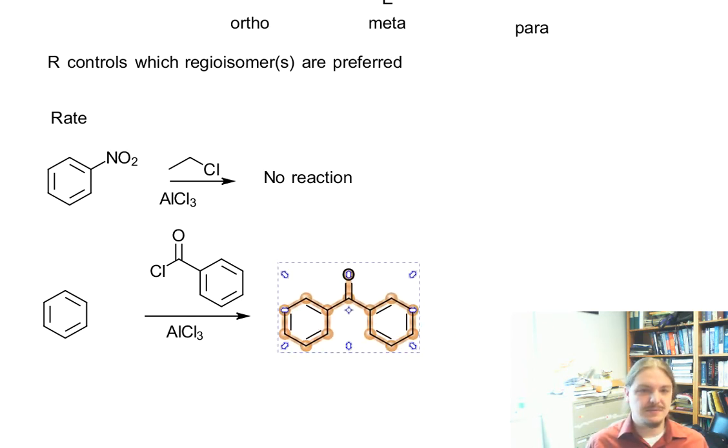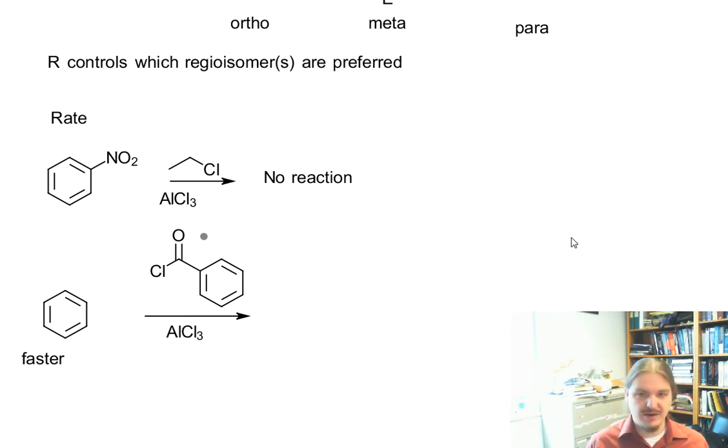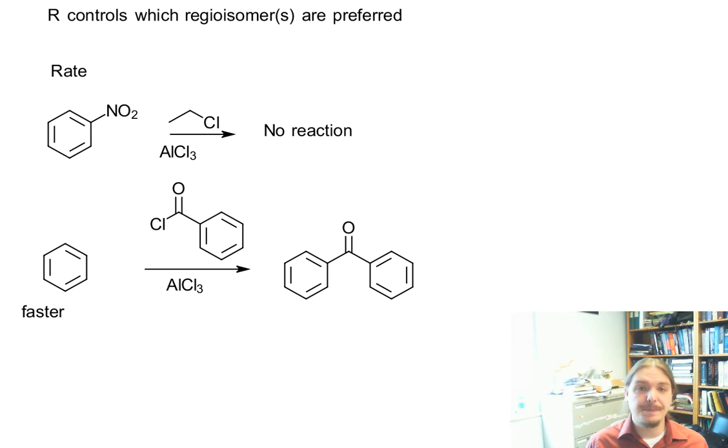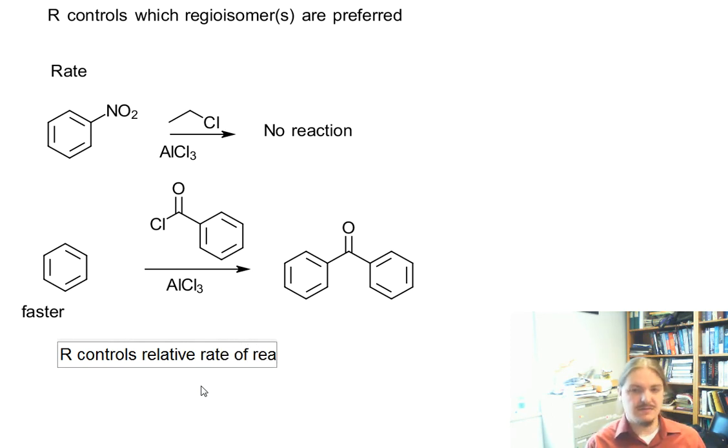And so we now have, you know, this benzene reacts faster than benzoyl chloride would as an aromatic ring in this reaction. So once again, R controls the relative rate of reaction.